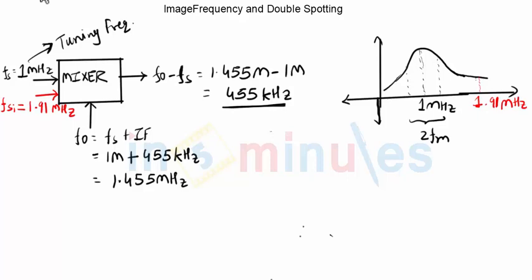Please do not forget that the tuning frequency is still 1 MHz. It is just that 1.91 MHz has entered into the receiver due to poor quality bandpass filter.